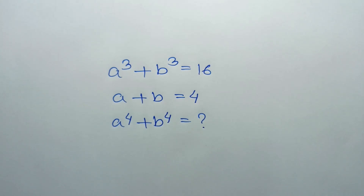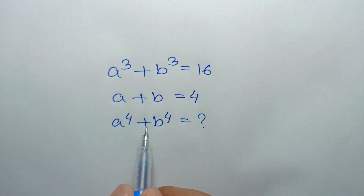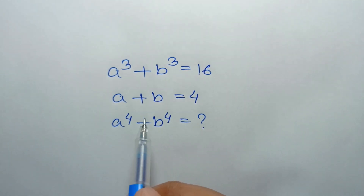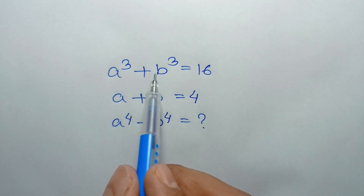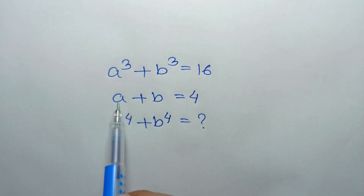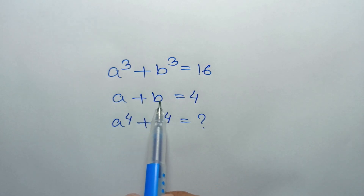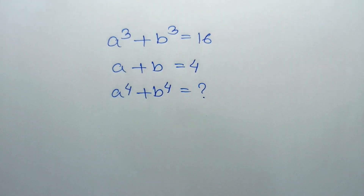Hi everyone. In this video I am going to show how to find the value of a to the power 4 plus b to the power 4, where a cube plus b cube is equal to 16 and a plus b is equal to 4.